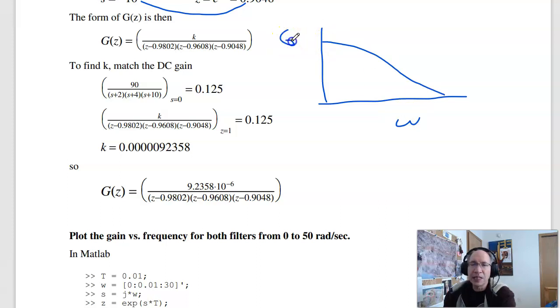To match the actual gain versus frequency is pick a point, typically DC. If I match the gain at DC and I have the same shape, I've got the same filter. The gain at DC should be 0.125. So pick K so that the digital filter also has a gain of 0.125. And what you wind up with is a really small number. So there's my filter.